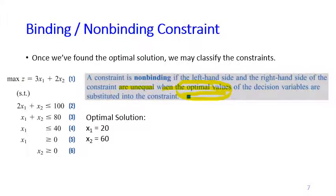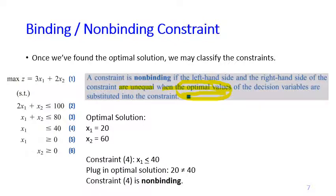Let's see the Giapetta problem again. Suppose now we want to check constraint 4. Constraint 4 says x1 less than or equals to 40. When we plug in the optimal solution, however, 20 does not equal 40. Therefore, we can say that constraint 4 is a non-binding constraint.